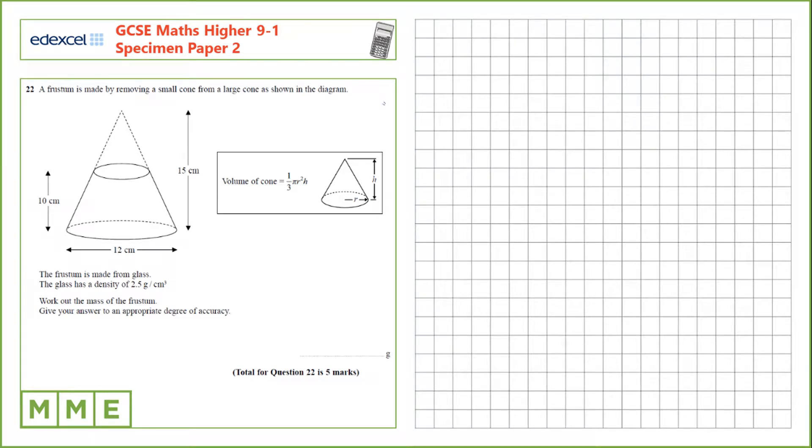Question 22. A frustum is made by removing a small cone from a large cone, as shown in the diagram. The frustum is made from glass and the glass has a density of 2.5 grams per centimeter cubed. We need to work out the mass of the frustum. Give your answer to an appropriate degree of accuracy.